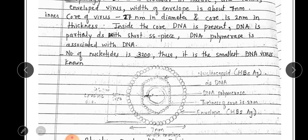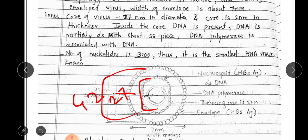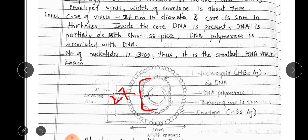The inner core of the virus is 27 nm in diameter. So the outer core (envelope) is 42 nm in diameter, the envelope width is 7 nm, and the inner core is 27 nm in diameter. This is the morphology of Hepatitis B virus.